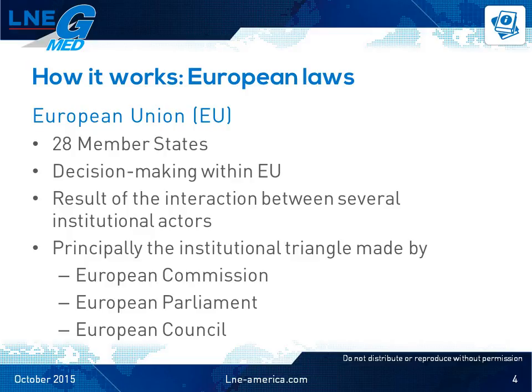First, we have to understand the functioning of the European Union. We won't cover its history in this short presentation. Here's enough information to understand the complexity of the processes for creating laws such as the new IVD and medical device regulations in Europe. The EU operates through a system of supranational independent institutions and intergovernmental negotiated decisions by the member states. Originally there were six countries when European countries started to cooperate economically in 1951, and over time more countries joined. The Union reached its current size of 28 member countries in 2013. The current EU is built upon the Institution Triangle of Commission, Council, and European Parliament.